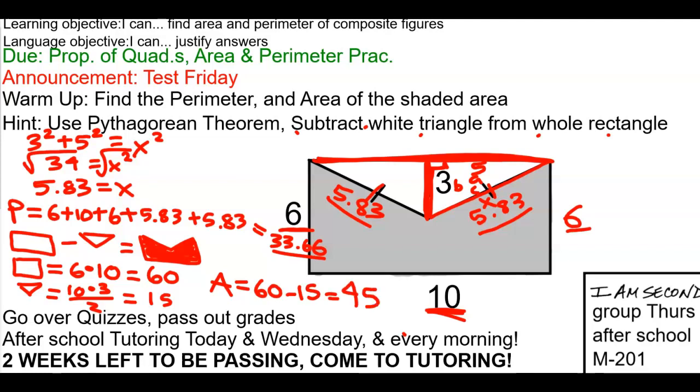We don't have units on here, my bad. But there you go. So final answer for area, 45. Final answer for perimeter, 33.6.